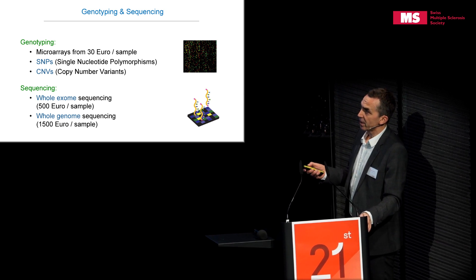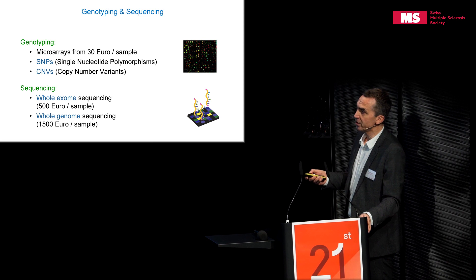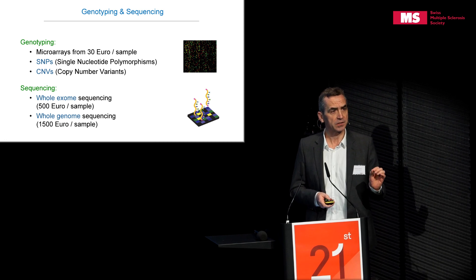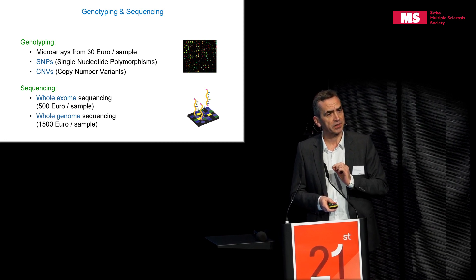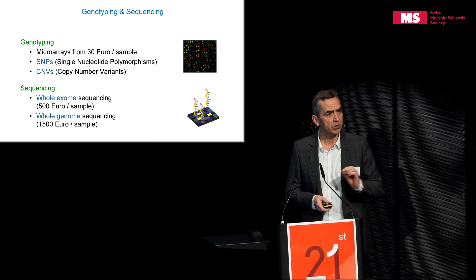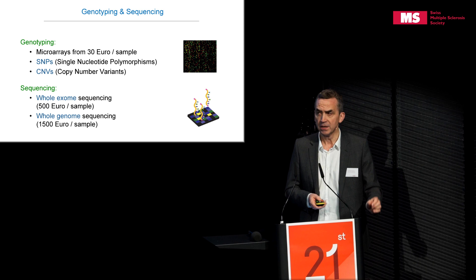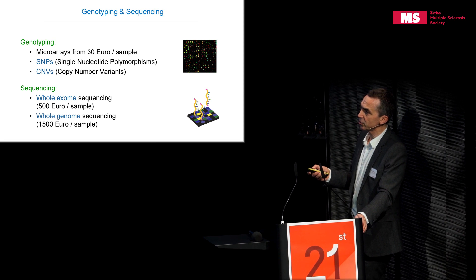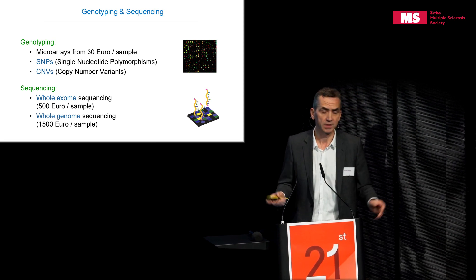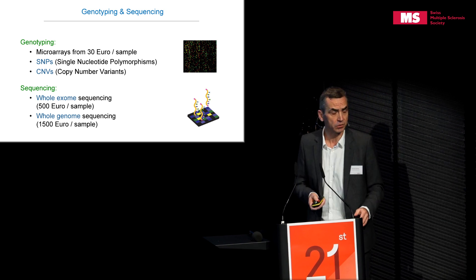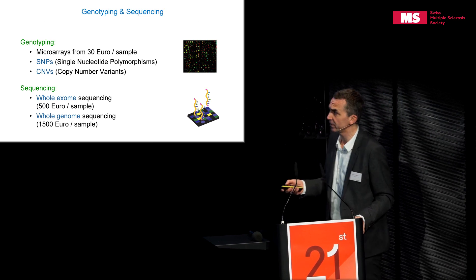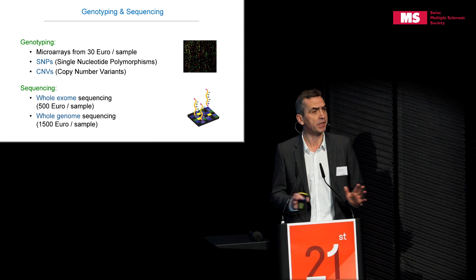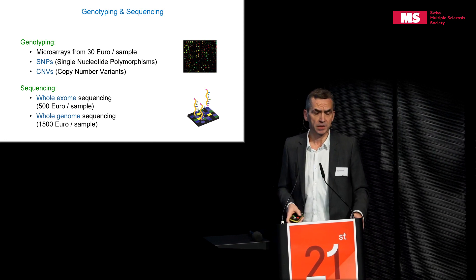This is now being replaced by a new technology called whole genome sequencing or whole exome sequencing. This technology provides all the information in your genome within a very short period of time. Whole exome sequencing covers all exonic areas, while whole genome sequencing covers essentially every base pair. The technology has become very cheap: 500 euros for the exome and 1,500 euros for the entire genome, making it widely available. You can now type thousands of people with this technology.